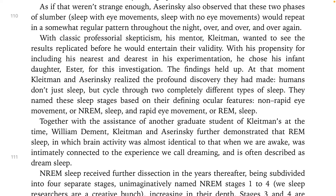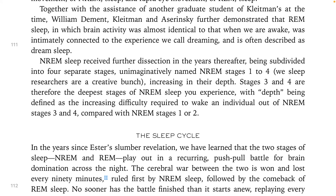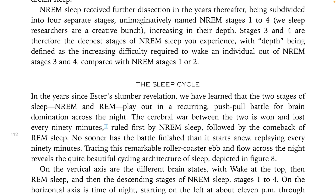Humans don't just sleep, but cycle through two completely different types of sleep. They named these sleep stages based on their findings: non-rapid eye movement, or NREM sleep, and rapid eye movement, or REM sleep. Together with the assistance of another graduate student, William Dement, Kleitman and Aserinsky further demonstrated that REM sleep — in which brain activity was almost identical to that when we are awake — was intimately connected to the experience we call dreaming, and is often described as dream sleep.